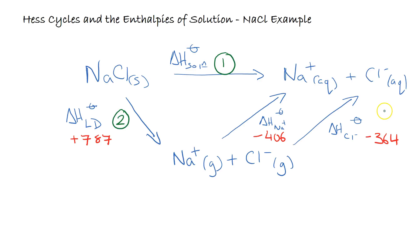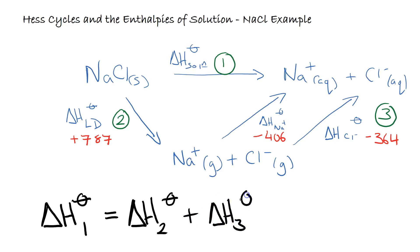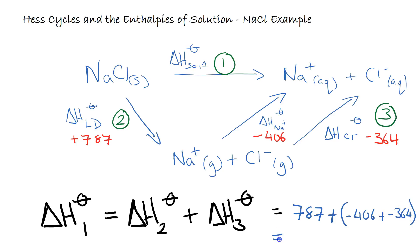So ΔH₁ (enthalpy of solution) = ΔH₂ + ΔH₃, where ΔH₃ is the total enthalpy of hydration. That gives us: 787 + (−406 + −364), giving a total enthalpy of solution of +17 kJ/mol.